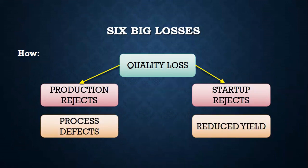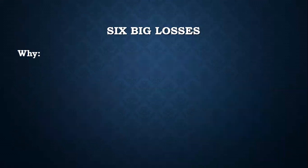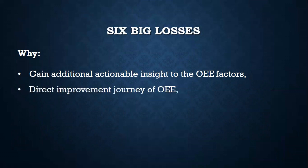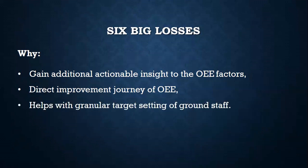Before going through examples of each loss, let's first understand why six big losses are important to identify and assess. They help any production engineer or manager by providing additional in-depth information about OEE loss in actionable form. These six losses drive and direct improvement of OEE — they are the direct factors. As OEE helps with achievable target setting for management, six big losses help in the same fashion for ground-level staff.